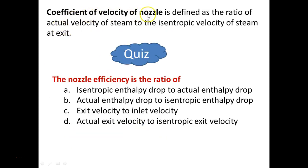The coefficient of velocity of the nozzle is defined as the ratio of actual velocity of steam to the isentropic velocity of steam at the exit: Cv = V₂' / V₂. Quiz: nozzle efficiency is defined as the ratio of actual enthalpy drop to the isentropic enthalpy drop. If your answer is that, you are correct.